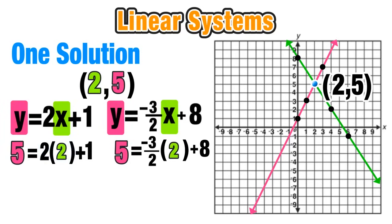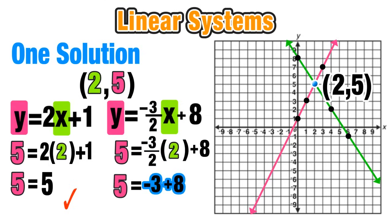So for the first equation, 2 times 2 is just 4 and then I add 1 to that. So 5 equals 4 plus 1, of course equals 5. So the first equation checks out because 5 equals 5. Now the equation on the right, negative 3 over 2 times 2 equals negative 3. Adding 8 to that, negative 3 plus 8 does equal positive 5. And again, 5 equals 5. So that also checks out.